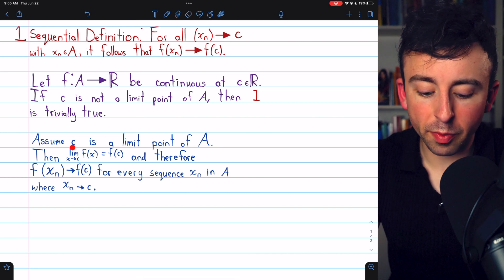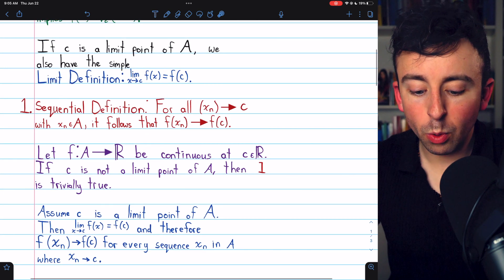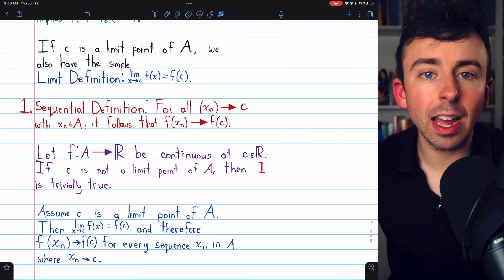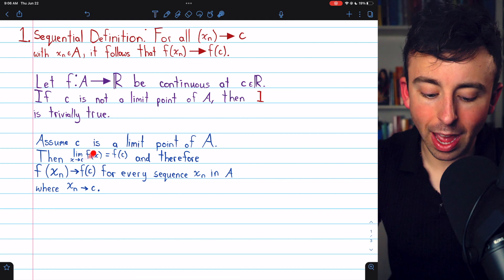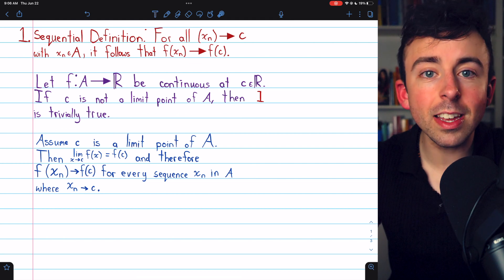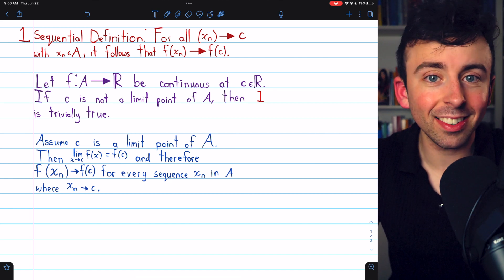Then, we can move on to the non-trivial case where c is a limit point of the domain, which means that our limit definition of continuity applies. So, the limit of f of x as x approaches c must equal f of c because we're assuming that f is continuous at c.